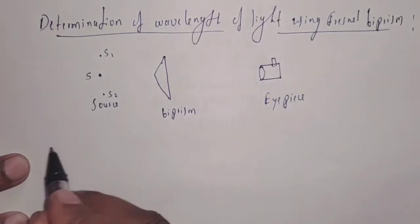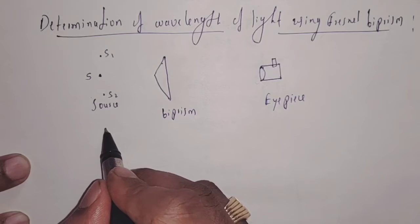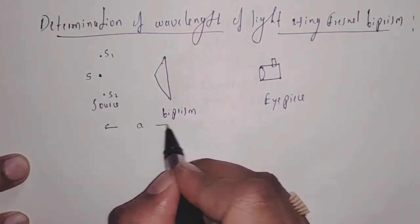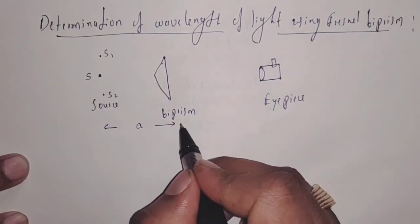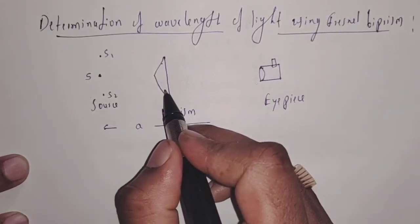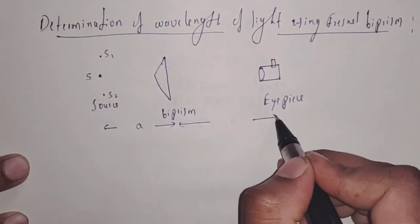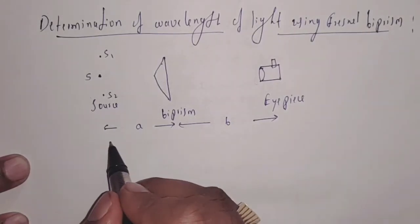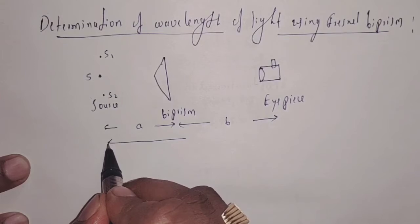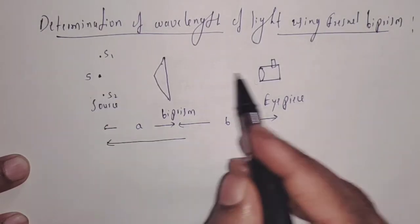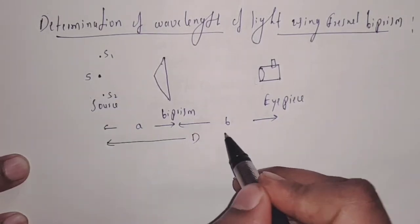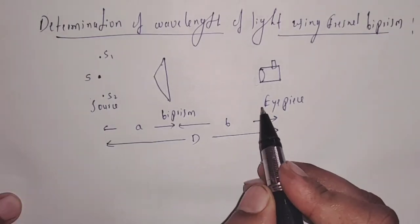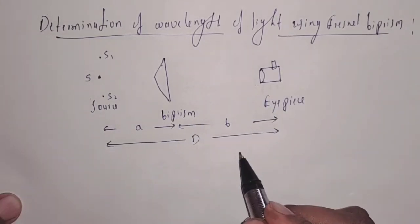The distance between source and biprism is A, and the distance between biprism and eyepiece is B. We represent the total distance from source to eyepiece. This is all about the experimental arrangement of the Fresnel biprism.